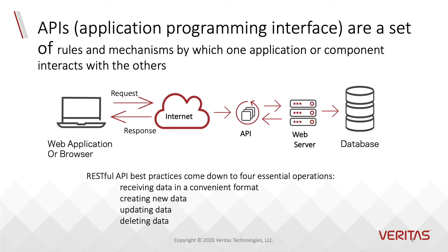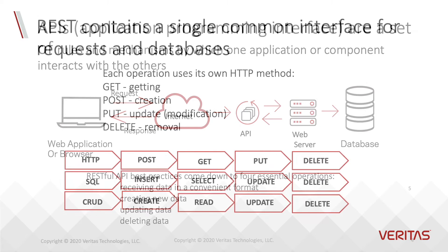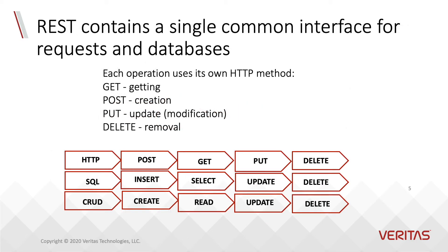Let's level set here quickly. APIs, or application programming interfaces, are a set of rules and mechanisms by which one application or component interacts with another. This allows you to provide a common interface for requests and databases, such as GET — getting information — and POST — creation of information.